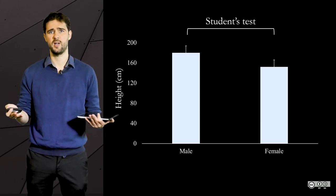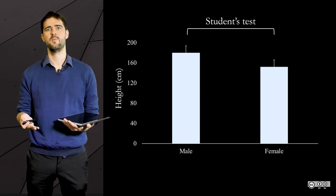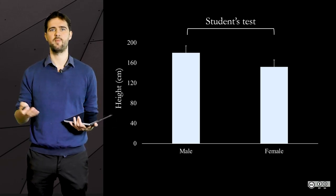You use these tests when the variable that you want to explain is continuous. Height is a continuous variable because it can take any value between, let's say, 1m and 2.5m.